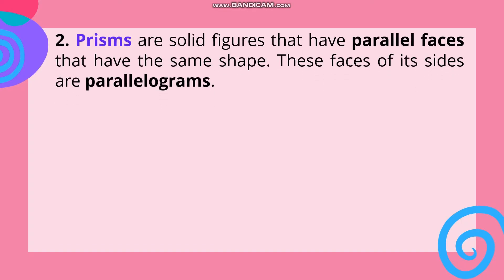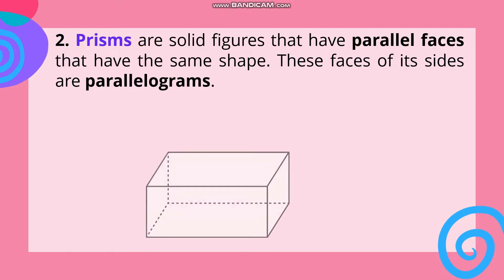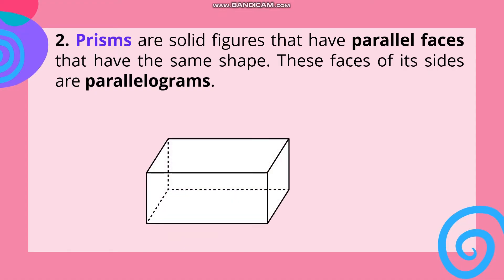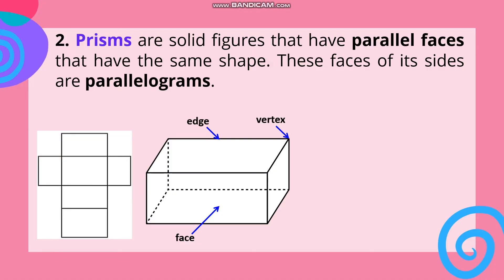Number two: Prisms. Prisms are solid figures that have parallel faces that have the same shape. These faces on each side are parallelograms. Kapag sinabing parallel faces or parallelogram, ito yung magkatapat na dalawang base at dalawang lateral faces na magkapareho ng size at shape. This is the figure of a rectangular prism showing the face, edge, and vertex. And this is the net of a rectangular prism.